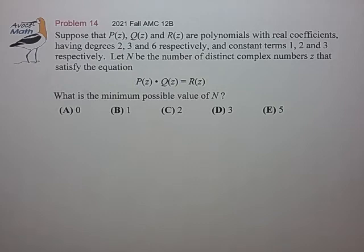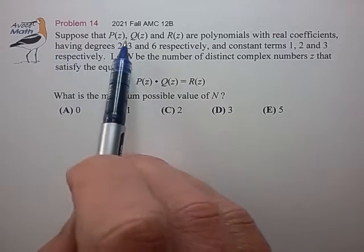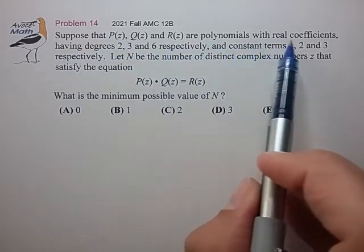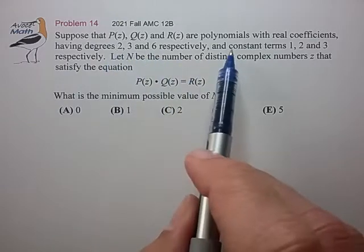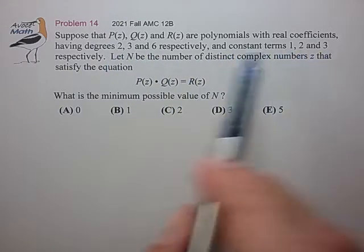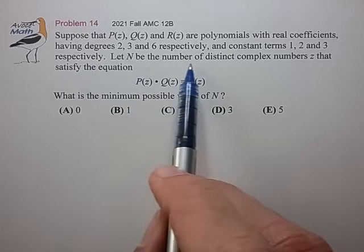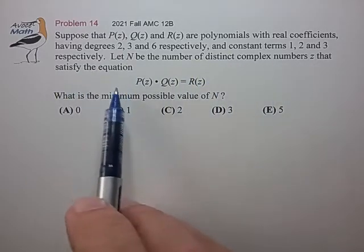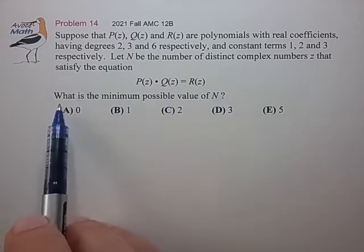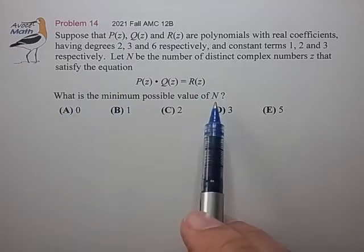Hi, this is problem 14 from the 2021 AMC 12b. Suppose that P(z), Q(z), and R(z) are polynomials with real coefficients, having degrees 2, 3, and 6, and constant terms 1, 2, and 3, respectively. Let N be the number of distinct complex numbers z that satisfy the equation P(z) times Q(z) equals R(z). What is the minimum possible value of N?